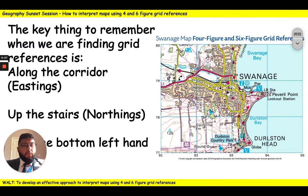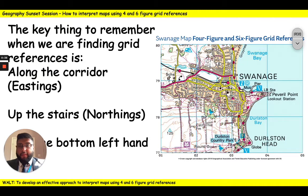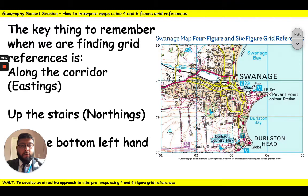The only type of map that really uses four and six figure grid references is an OS map, or an Ordnance Survey map. They are an organisation responsible for mapping the UK, and they've divided each part of the UK up into grid squares. You can see some examples of these grid squares on the right.